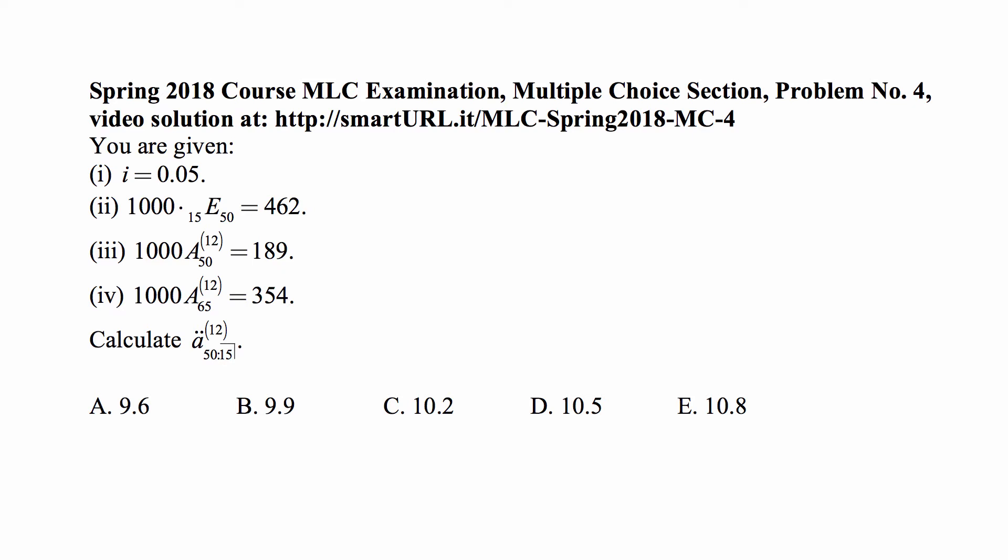1,000 times the cost of life insurance on a 50-year-old with benefit payable at the end of the month of death. Of course, this capital A refers to unit benefit, and by multiplying it by 1,000, we make the actual present value the value for 1,000 benefit payable at the end of the month of death. And that's equal to 189. And the same value, but for a 65-year-old, is 354.